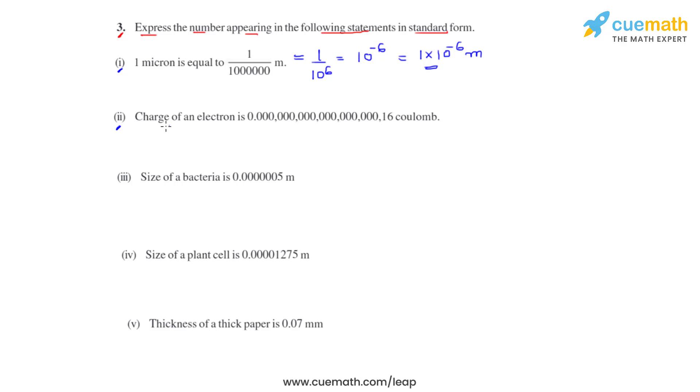Coming to the second bit, we have been given the charge of an electron. The unit of charge of an electron is coulomb. To convert this into standard form, we have to get the decimal between 1 and 6.